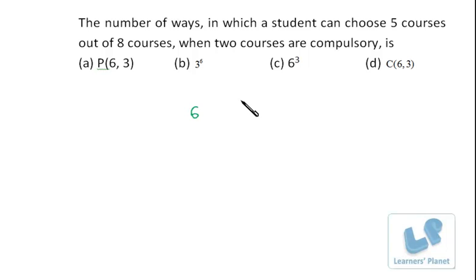He has to choose three more courses to make five courses, so 6C3. That is 6 into 5 into 4 by 6, so it's 20. This is 6C3, right? Not 6P3. This is 6C3, so it's 20.